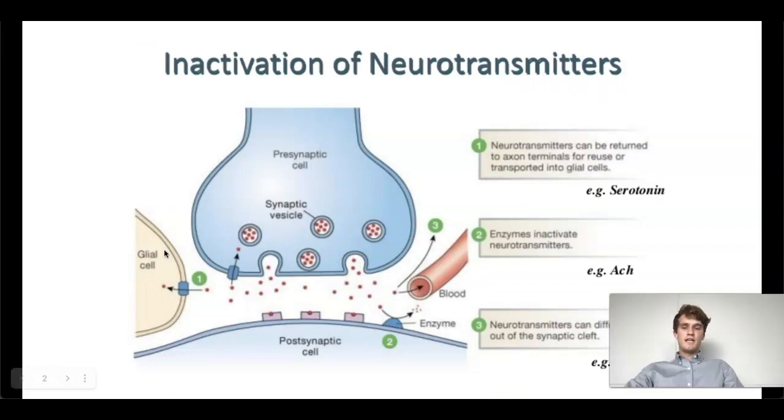The next thing that we need to understand is how neurotransmitters are inactivated. The first step in the neurotransmitter cycle is release from presynaptic vesicles. These vesicles are formed within the presynaptic cell and then attach here at the presynaptic membrane. Ultimately, they're released due to exocytosis, which then diffuse across the synaptic cleft to attach to receptors on the postsynaptic cell.